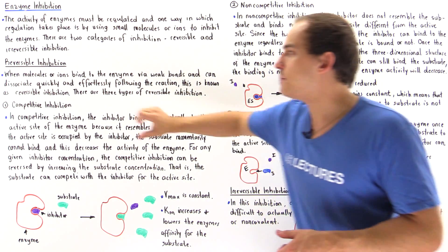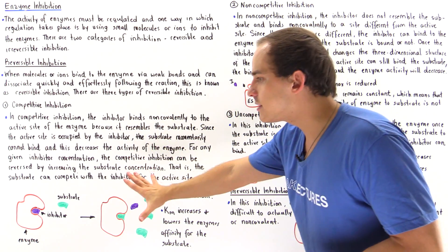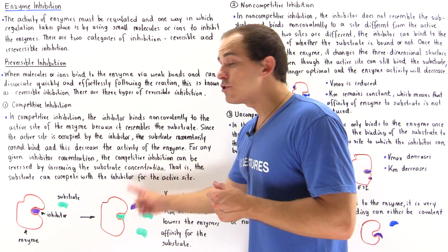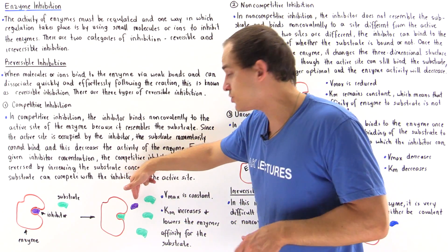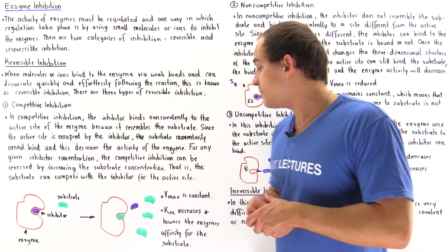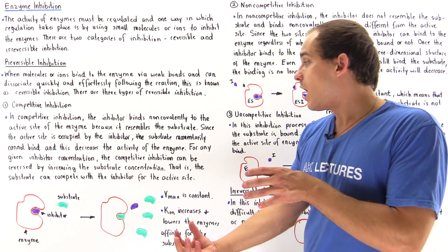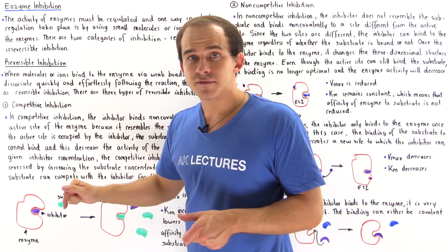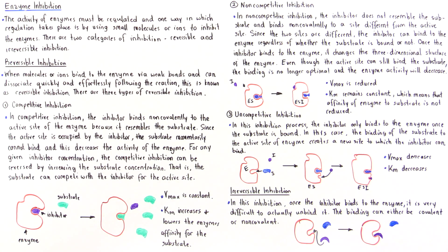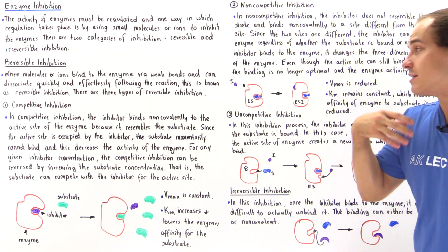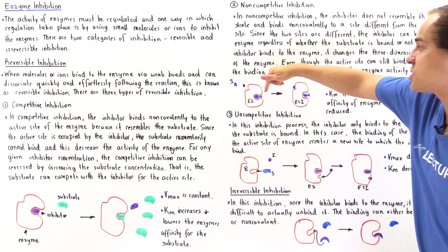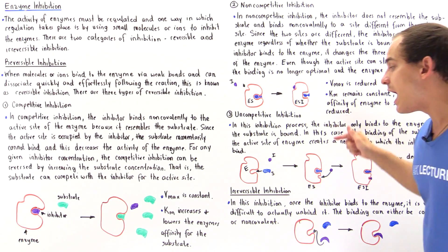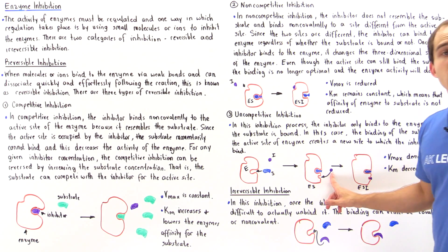For reversible inhibition, we have three cases: competitive, non-competitive, and uncompetitive. In competitive, the inhibitor resembles our substrate and binds directly to the active site — so by increasing the substrate concentration while keeping the inhibitor concentration the same, we increase the probability of substrate binding and can displace the inhibitor. But in non-competitive and uncompetitive, the inhibitor does not bind to the active site. In non-competitive, the inhibitor binds to an allosteric site regardless of whether the substrate is bound. In uncompetitive, the inhibitor can only bind to its site when the substrate first binds to the active site, which creates that pocket for the inhibitor.